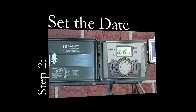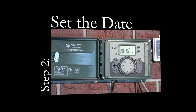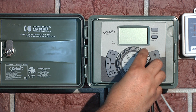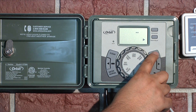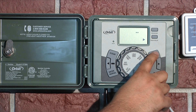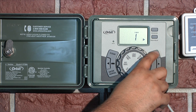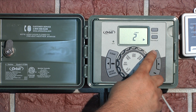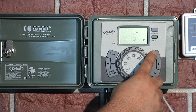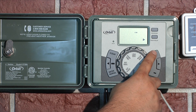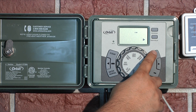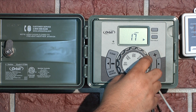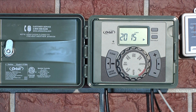Now that you've set the current time, turn the dial to the next position: Set Date. First, set the correct year by pressing the plus and minus buttons. Press the right arrow button and use the same process to set the correct month. Use the right arrow one more time and set the correct day of the month. Now you are finished setting the date and are ready to start setting the timer program.